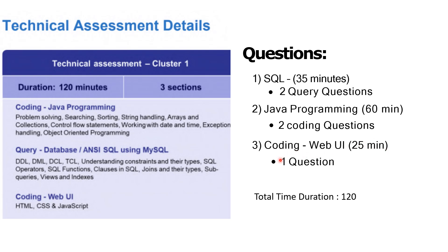The total time allocated for the Coding WebUI section is 25 minutes. We have to edit some code in the provided files. There are 3 files provided: HTML, CSS, and JavaScript. The total time allocated for this entire technical assessment is 120 minutes.